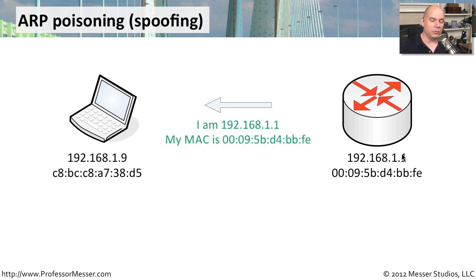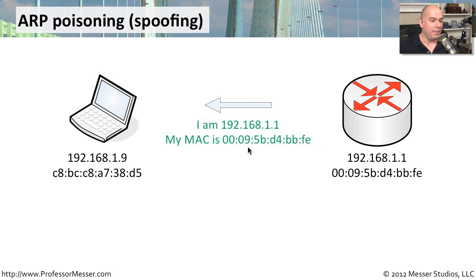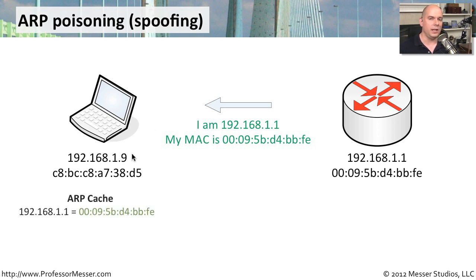That device — the 1.1 router — sees the broadcast and sends back the MAC address, saying: I'm 192.168.1.1 and my MAC address is 00:09:5B:D4:BB:FE. That reply is received by the 192.168.1.9 workstation and goes into a local cache in memory.